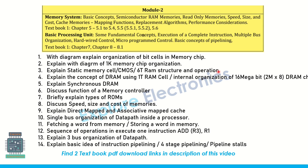You can get this question in the exam — explain how the 6T RAM structure works with read and write operations. The 1T RAM cell (dynamic RAM) and how storage works in a 1T cell, and constructing a 16 MB (2 mega × 8) DRAM structure can be asked. Explain synchronous DRAM and the function of memory controller. Different types of ROMs like EPROM can be asked. Also, discuss speed, size, and cost of memories — how speed varies with respect to size and cost.